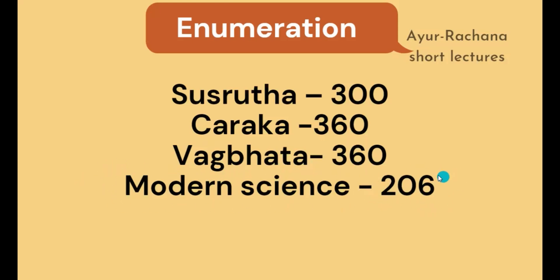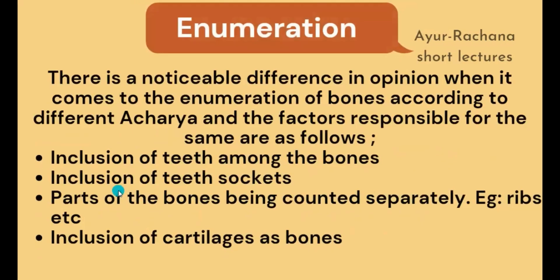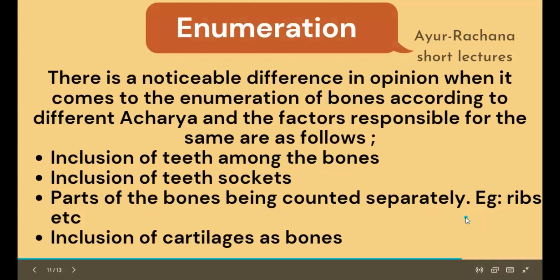What might be the reason for the difference in opinion on the number of astis? The observations were totally different during the era of Acharya Susruta. Reasons include the inclusion of teeth among the bones, inclusion of tooth sockets as separate bones, parts of a bone counted separately, and the inclusion of cartilages as bones — some cartilages have also been described under the Tarunasthi classification.